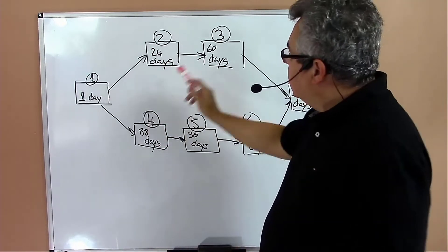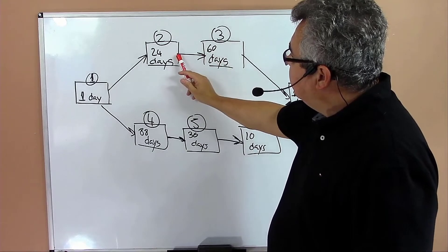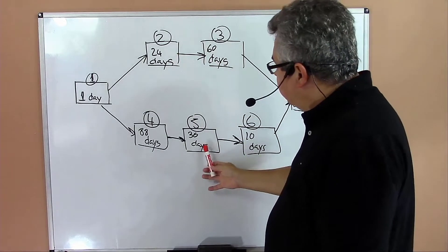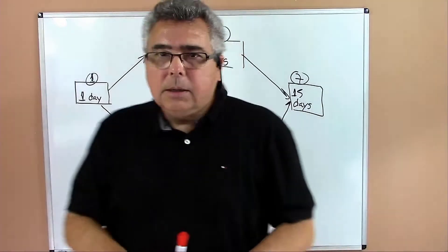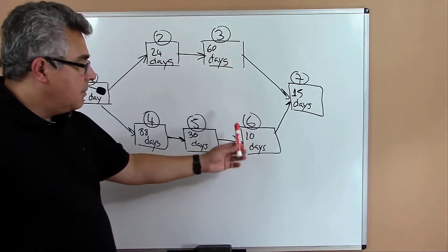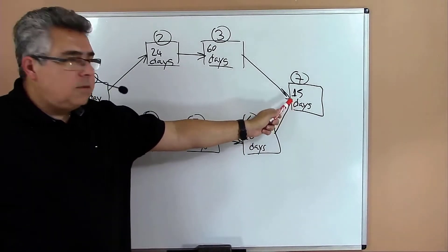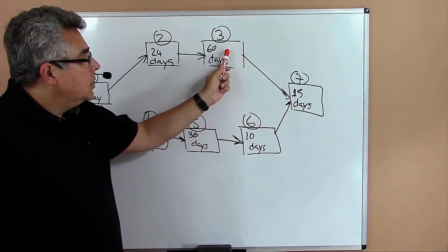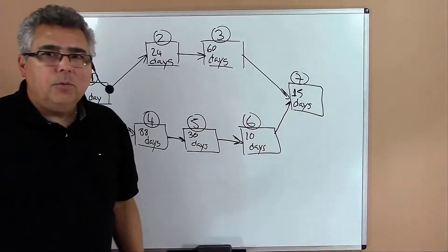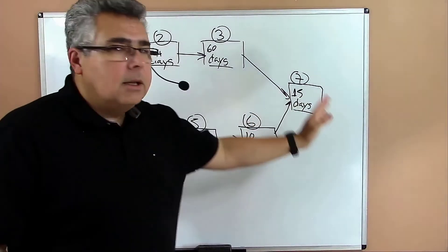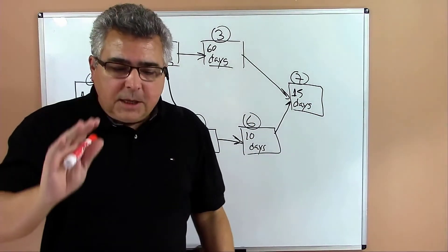Activity three can start once I finish activity two. Activity five can start once I finish activity four. Activity six can start when I finish activity five. To start activity seven, I have to finish activities three and six. Once I finish both, I can start activity seven and then complete the project.